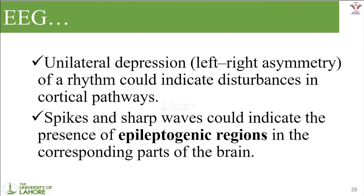Unilateral depression, also known as left-right asymmetry, and an asymmetric rhythm could indicate disturbances in cortical pathways. This may mean the EEG electrodes have not been placed properly — the distance between the left and right electrodes is not equal, or the nasion-to-inion placement is not correct. That is why we may get some unilateral depression or disturbance in our EEG waveforms.